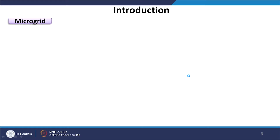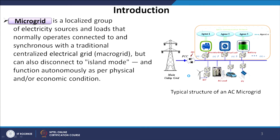First we need to understand what is a microgrid. Microgrids have different definitions, but one fundamental way of explaining a microgrid is: a microgrid is a localized group of electricity sources and loads that normally operate connected to and synchronous with a traditional centralized electrical grid, but can also disconnect to islanded mode and function autonomously as per physical and/or economic conditions.